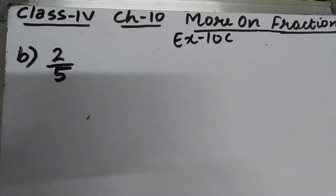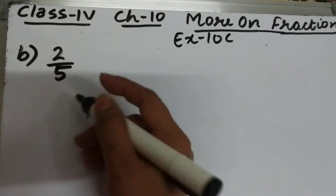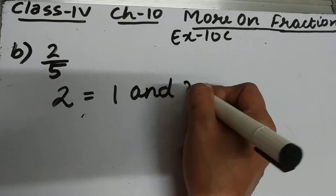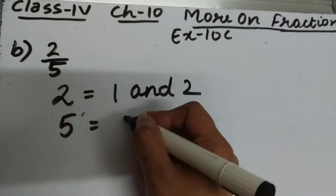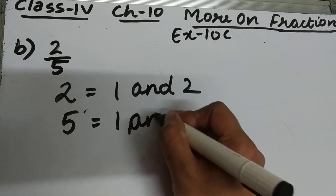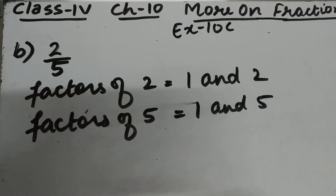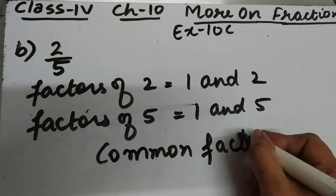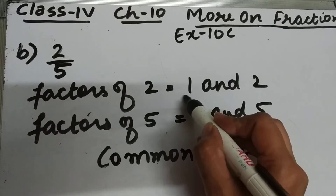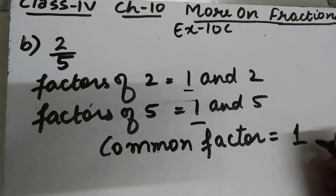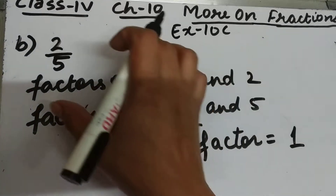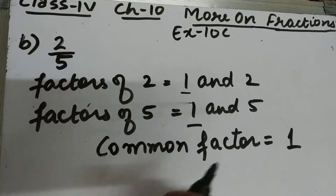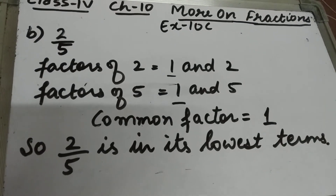Part b is 2 upon 5. Since 2 is a prime number, factors of 2 are 1 and 2. And 5 is also a prime number, so factors of 5 are 1 and 5. The common factor between 2 and 5 is only 1. That means 2 by 5 is in its lowest terms, because the common factor between numerator and denominator is only 1.